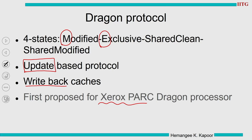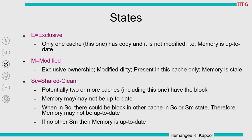The S state is divided into two variants: one is called Shared Clean (SC) and the second is called Shared Modified (SM). Exclusive means only this cache has the data block and memory is up to date. M means modified — we have ownership, the block is dirty, memory is stale, and this is the only cache with the data block.